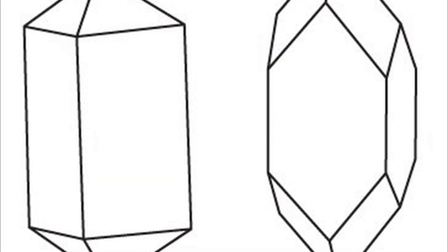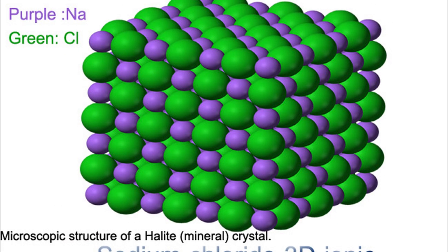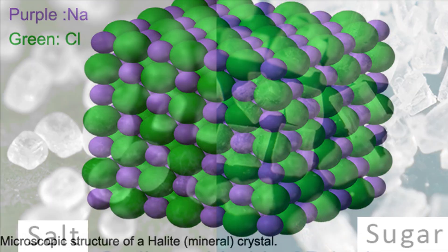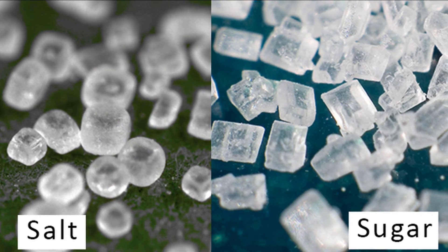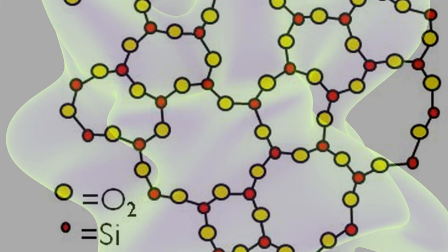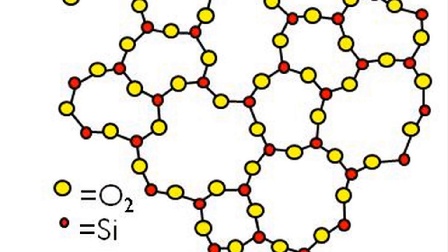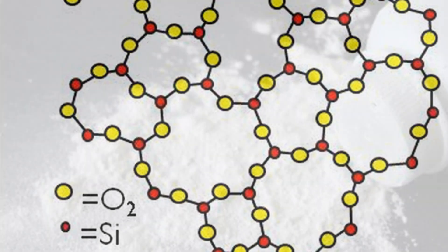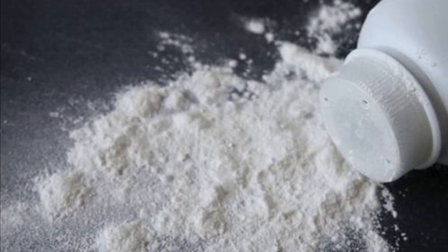Crystalline shape: Solids have a definite geometrical shape, e.g. salt and sugar. Amorphous: Solids lack a definite shape, e.g. talcum powder, flour and plastic.